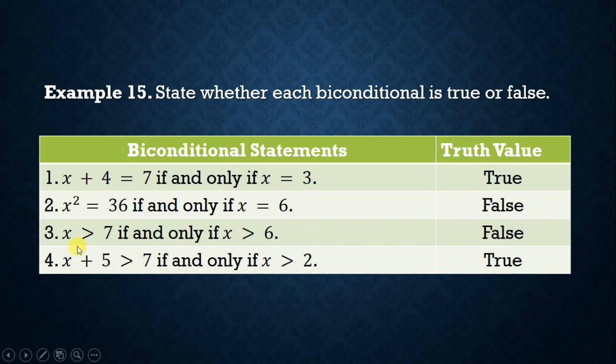Number three: x > 7 if and only if x > 6. Both equations are true for any value of x greater than 7, and both are false for any value of x less than 7. However, when x = 7, the first equation is false while the second is true; hence the bi-conditional statement is false.